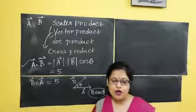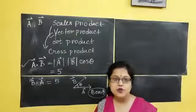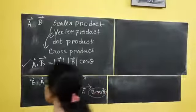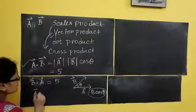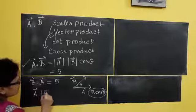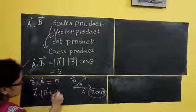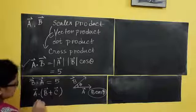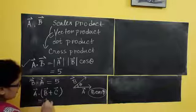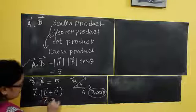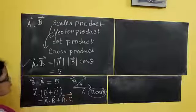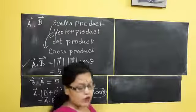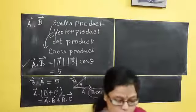The next property: scalar product is distributive. Distributive property means A dot (vector B plus vector C) equals A dot B plus A dot C. So vector scalar product is also distributive.